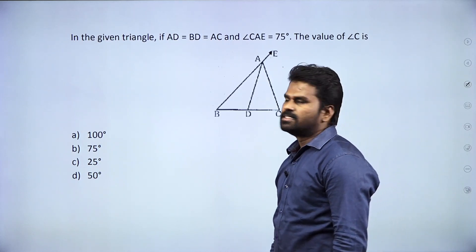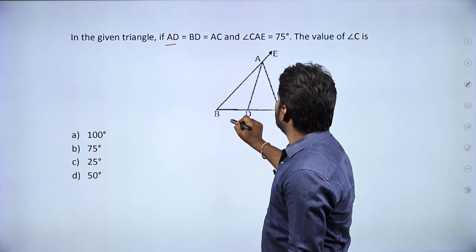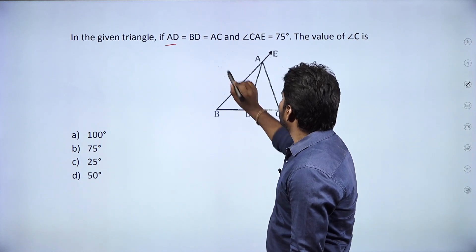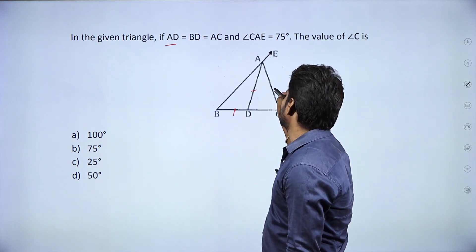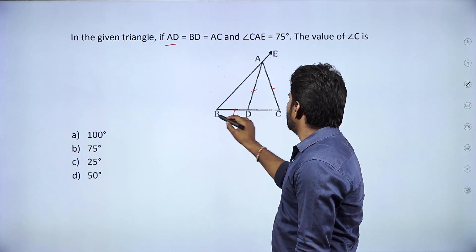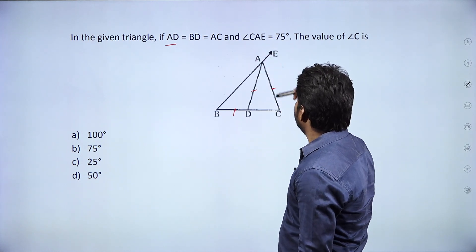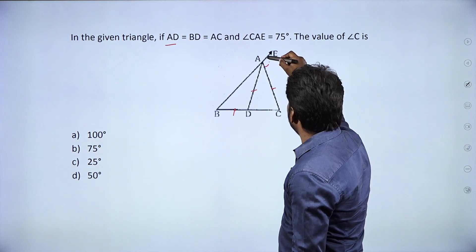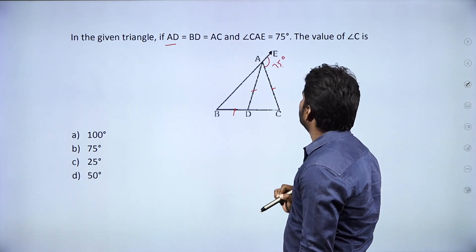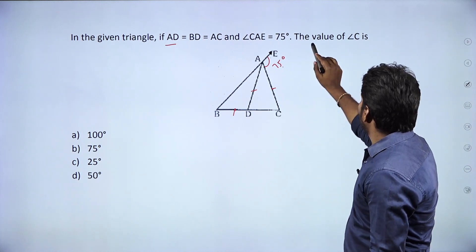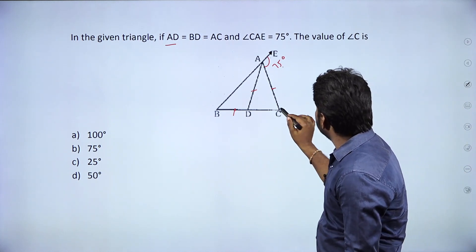In the given triangle, AD equal to BD equal to AC, and angle CAE is equal to 75 degrees. Then find the value of angle C.